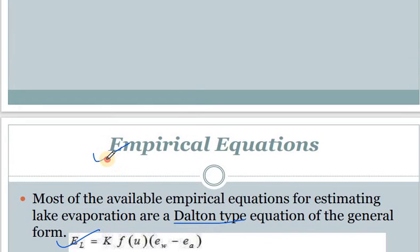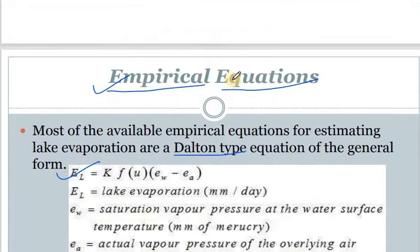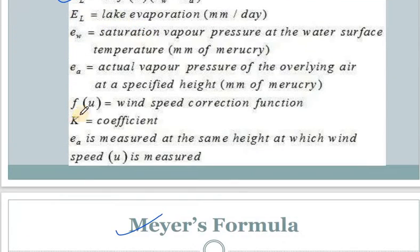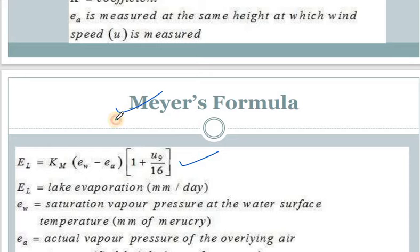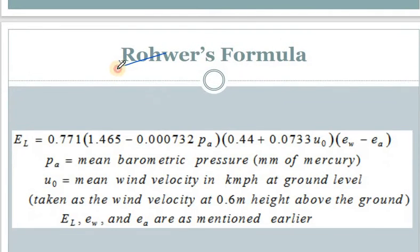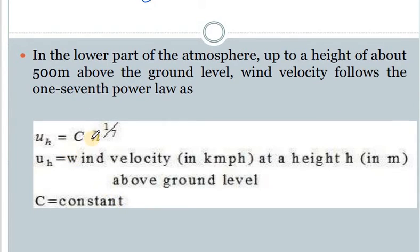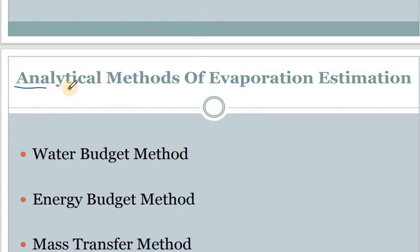We also studied the empirical equations. Various scientists have done research on evaporation and come out with equations to calculate it. The first one is the Dalton-type equation: E_L = K·f(u)·(e_w − e_a). We have discussed this earlier. The second equation is given by the scientist Meyer — Meyer's formula — and then there is Rohwer's formula. Based on wind velocity we also have one formula.